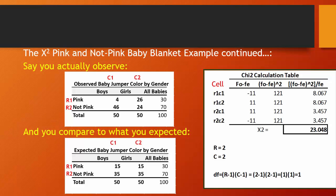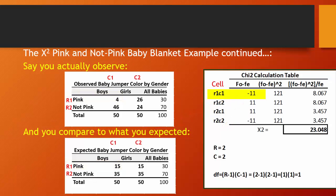We do this calculation on a cell-by-cell basis. For R1C1 — boys wearing pink — we observed 4 but expected 15. Observed minus expected = 4 − 15 = −11. Squared, that's 121. Divided by the expected cell count of 15 gives us 121 ÷ 15 = 8.07.